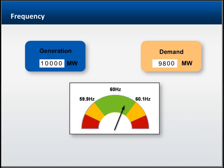If the operator is unable to bring frequency close enough to the target level, the electrical system will begin shutting down to avoid damaging customer appliances and generating equipment.